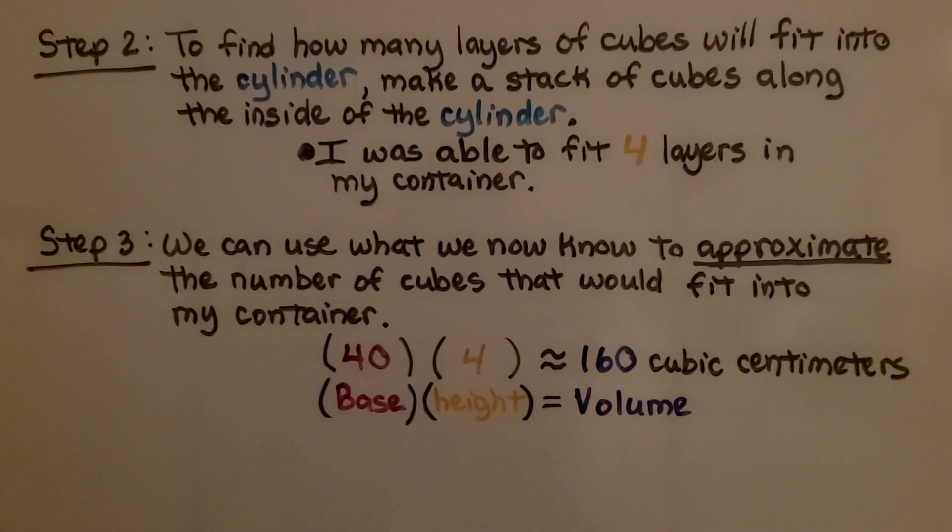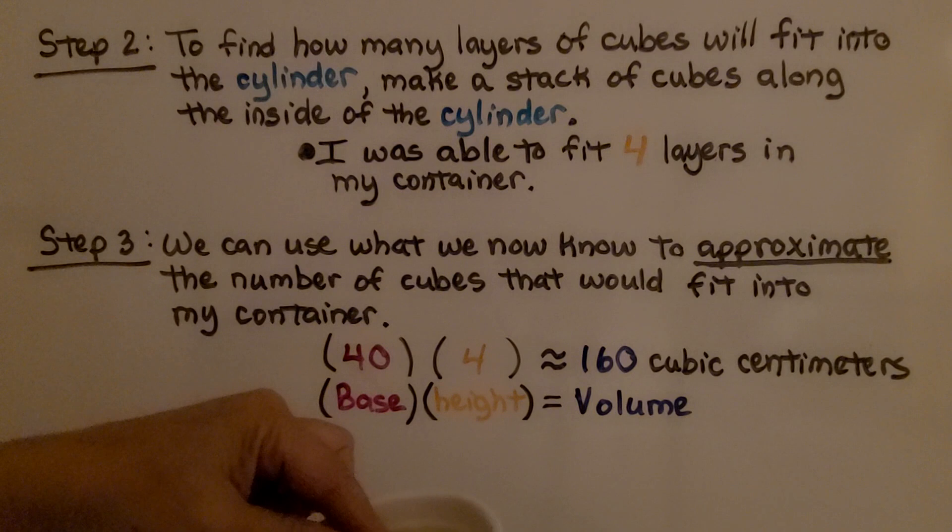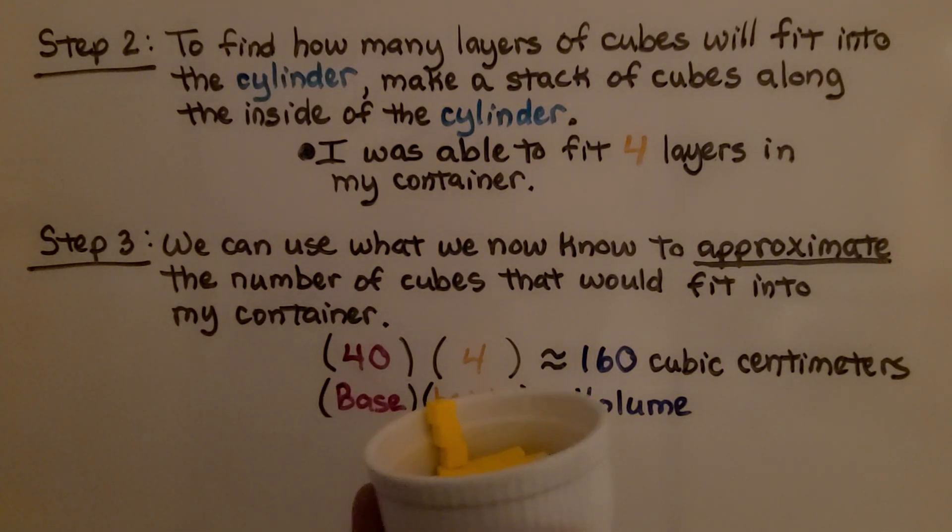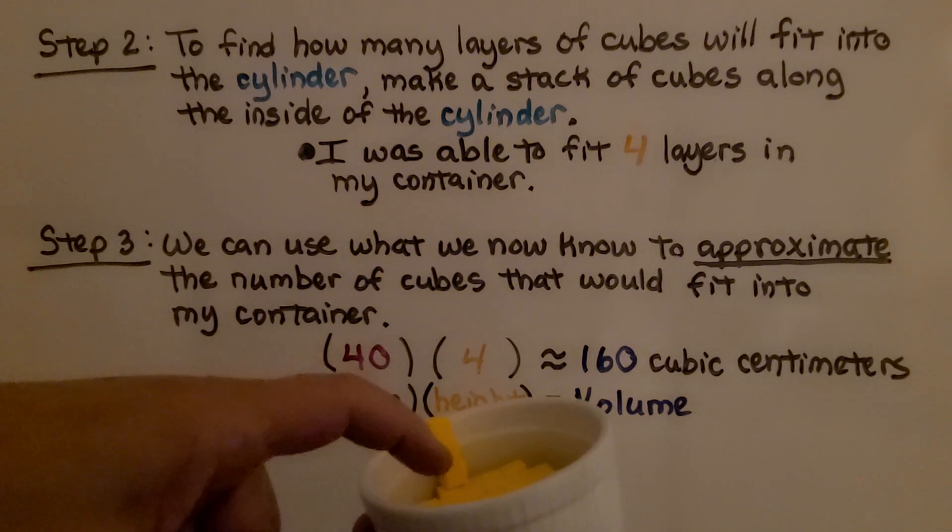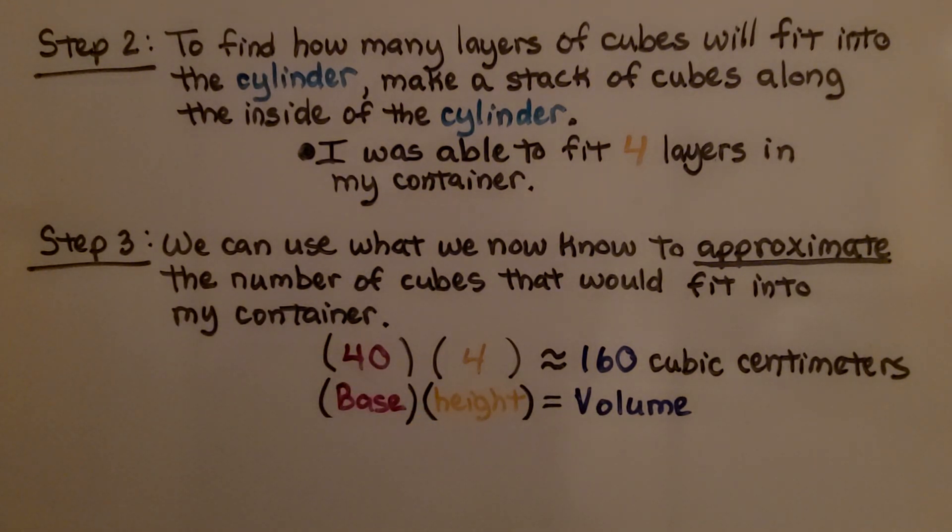Step two: to find how many layers of cubes will fit into the cylinder, we make a stack of cubes along the inside of the cylinder. So right along the inside edge here, I'm going to stack some cubes, one column like that. So I have this bottom layer and three more. I was able to fit four layers in my container.